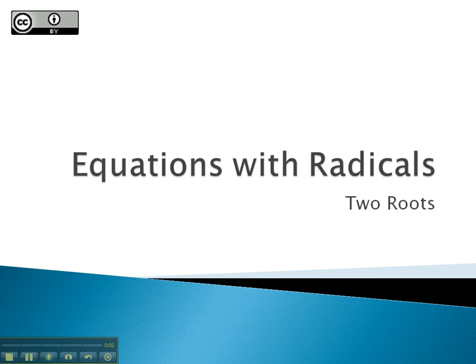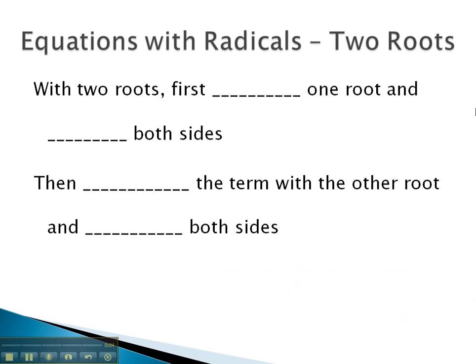In this video, we will look at solving equations with radicals that have two roots in the problem. With two roots, we must first isolate one root and then square both sides, or use whatever exponent is appropriate. Then, we will isolate the term with the other root and again square both sides.